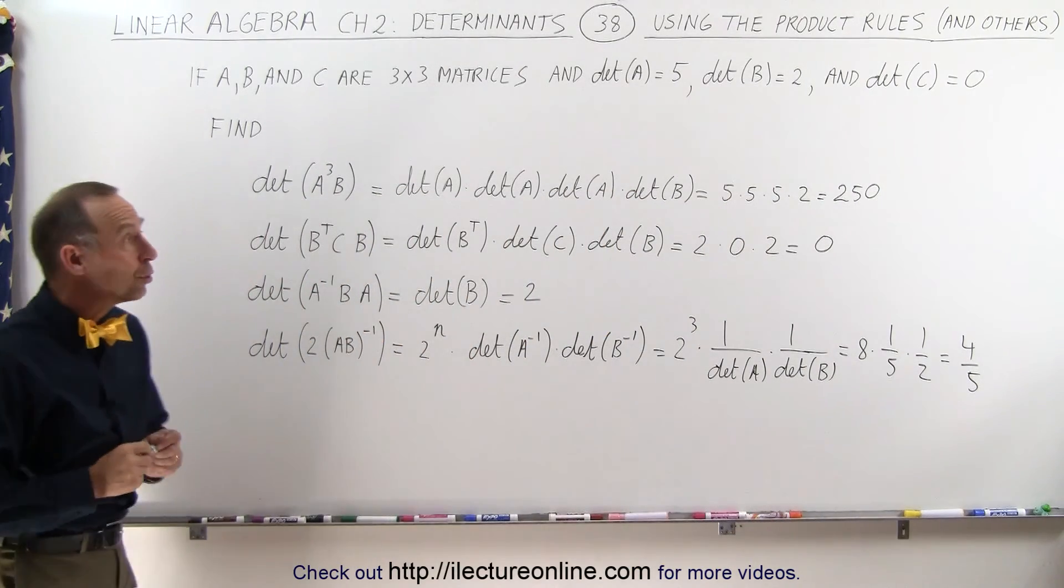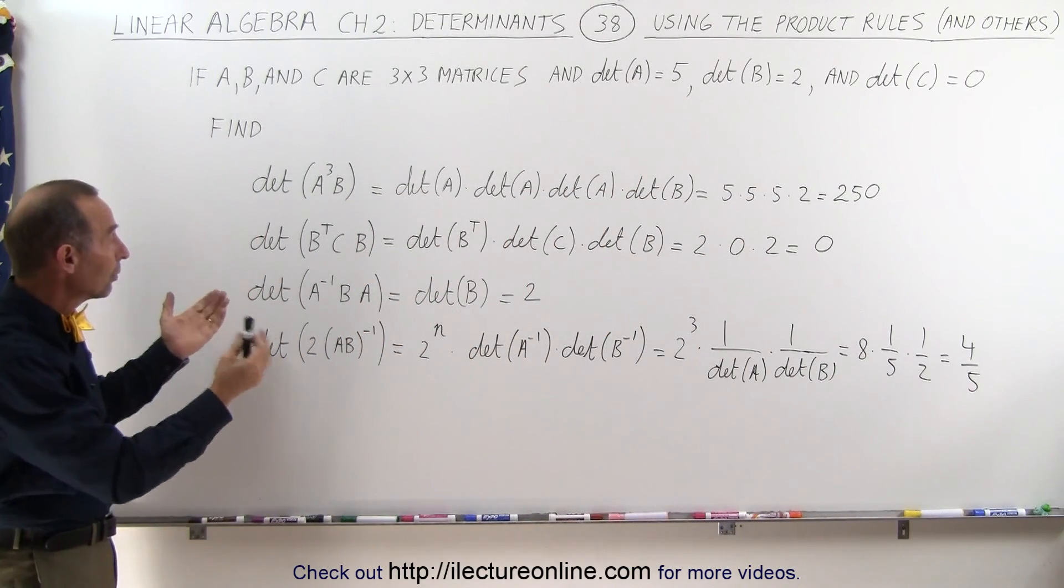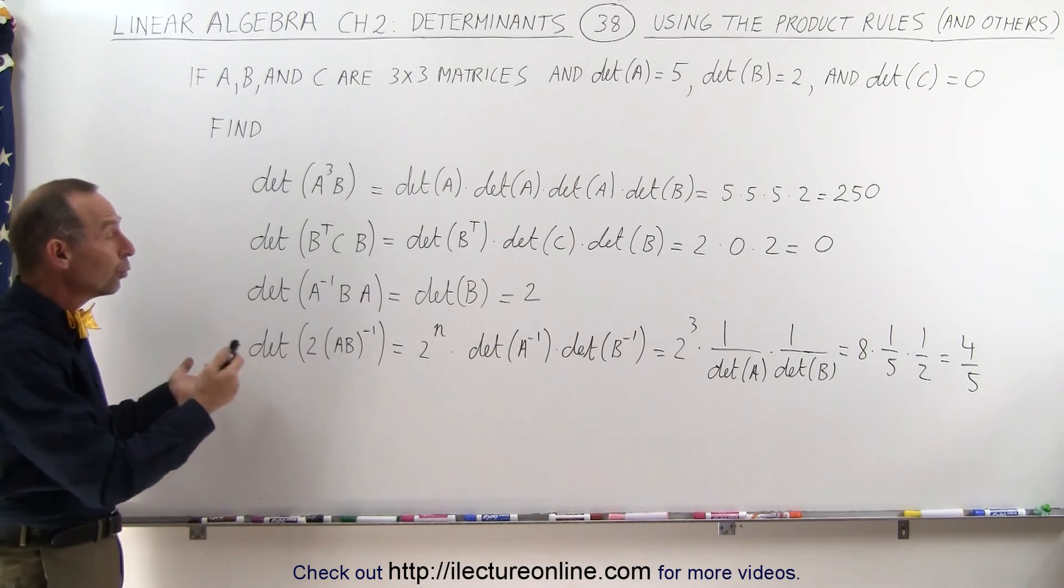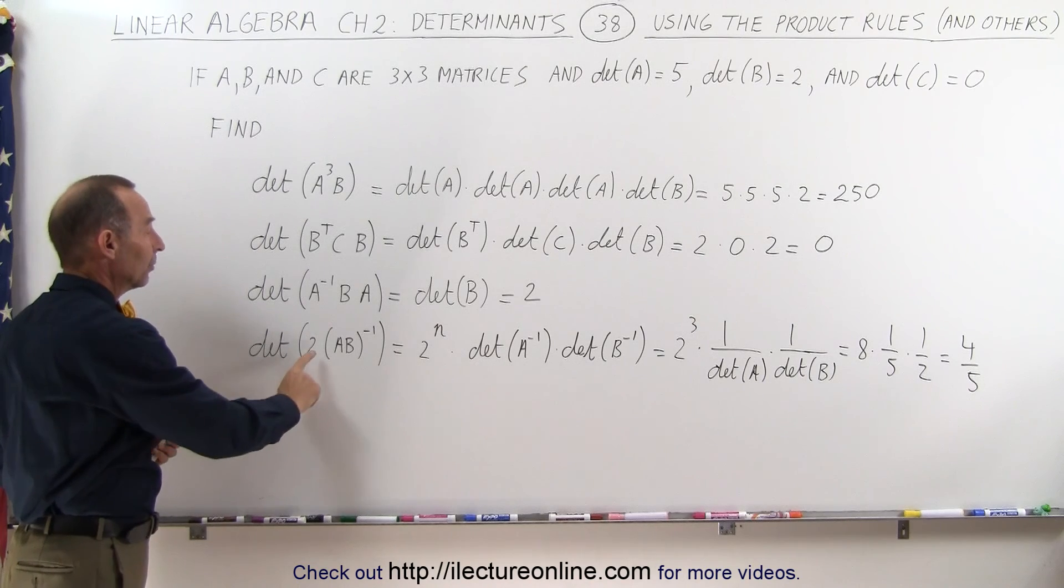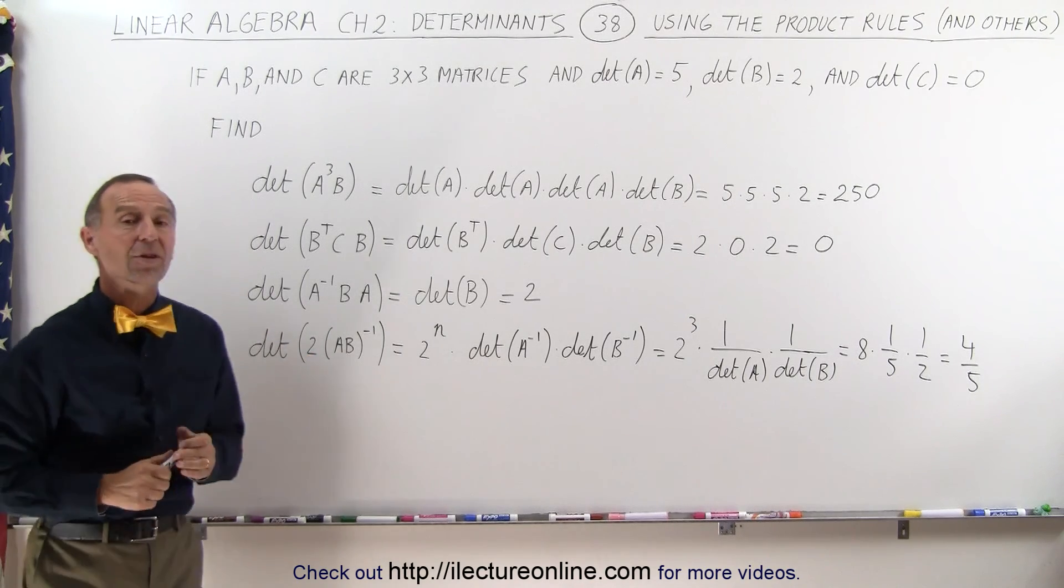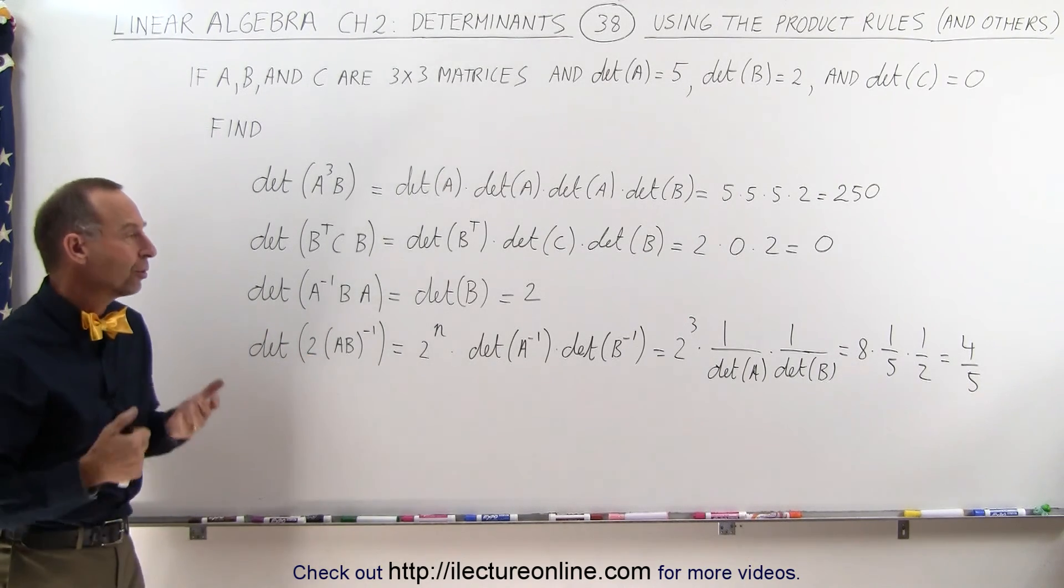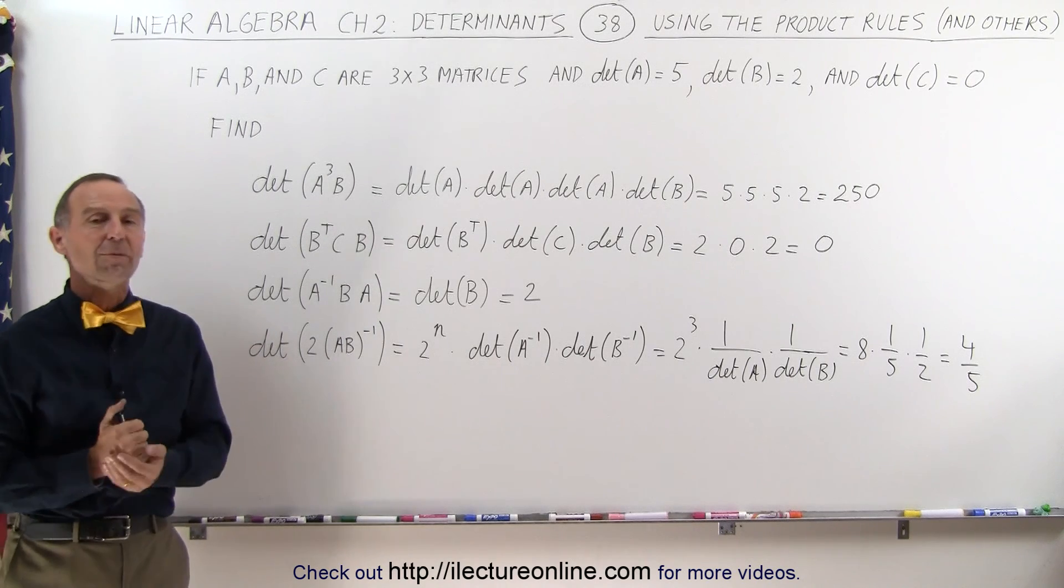And that's how we can use the rules, the product rules of determinants, and other rules such as A inverse and A, and B transpose, and when we multiply times a constant, on how to find the final determinant of a combination of matrices like that. And that's how it's done.